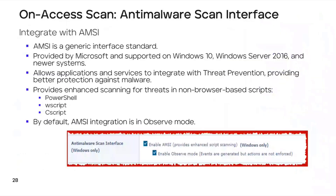Next, let's look at OnAccess Scan Anti-Malware Scan Interface. You can configure the OnAccess Scanner to integrate with AMSI — a generic interface standard provided by Microsoft supported on Windows 10, Windows Server 2016, and newer operating systems. AMSI allows applications and services to integrate with threat prevention, providing better protection against malware. Integrating with AMSI provides enhanced scanning for threats in non-browser-based scripts such as PowerShell, WScript, and CScript. By default, AMSI integration is in observed mode — scanning events report malicious scripts to the server but no action is taken. Disable observed mode to actively block these threats.